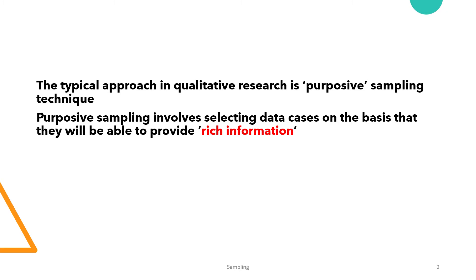In qualitative research we use non-random sampling techniques. The typical approach in qualitative research is purposive sampling. It involves selecting data cases that have rich information about the phenomenon. This means that we have to select all key participants that completely fulfill the purpose of our study.